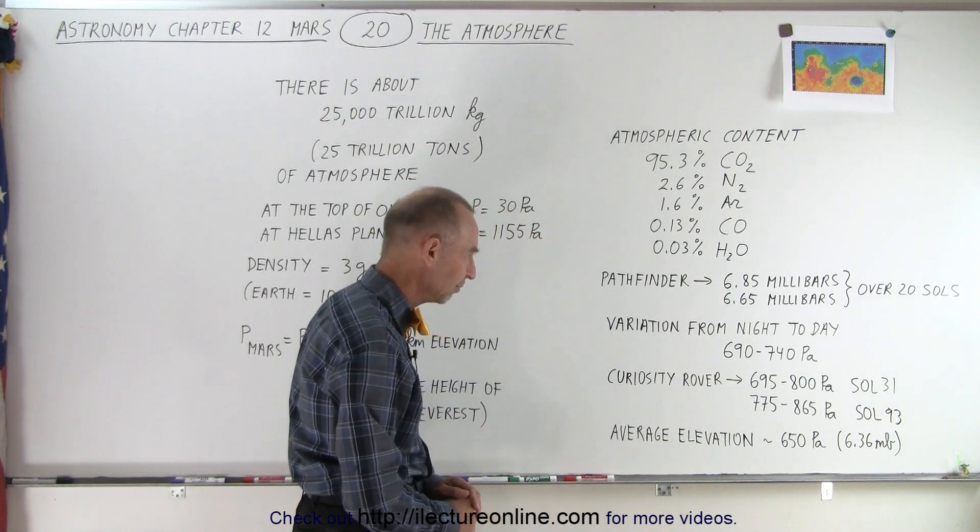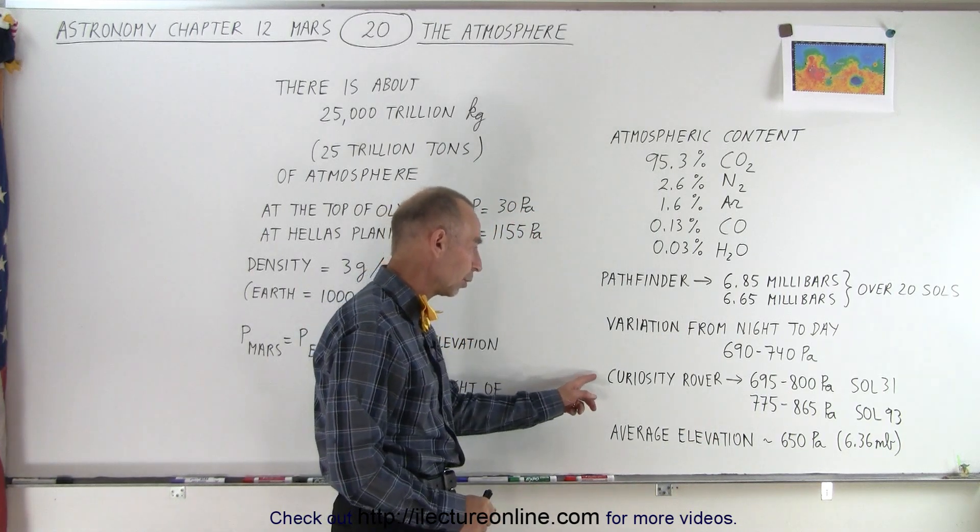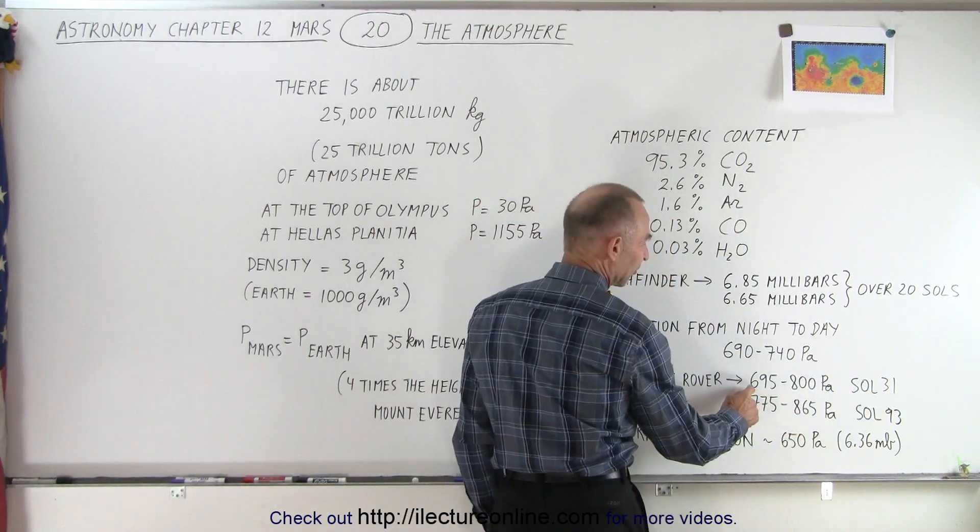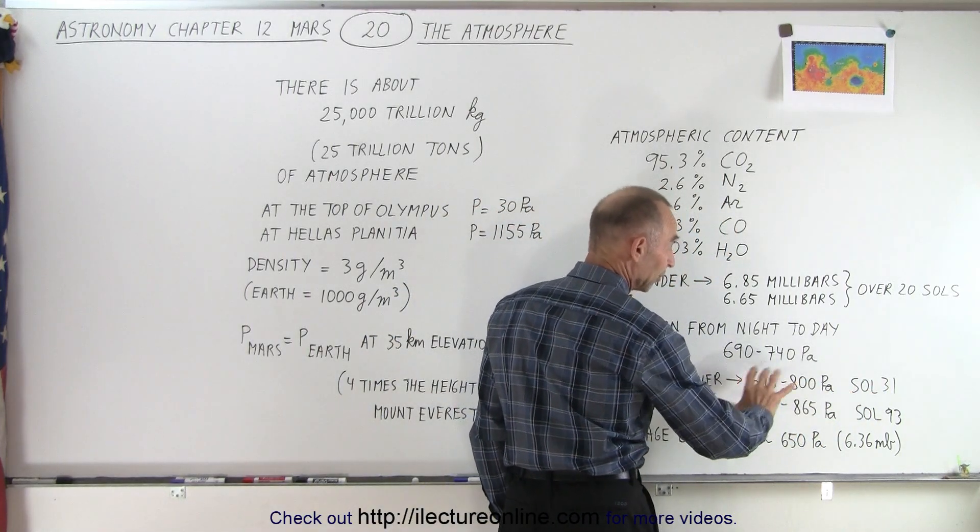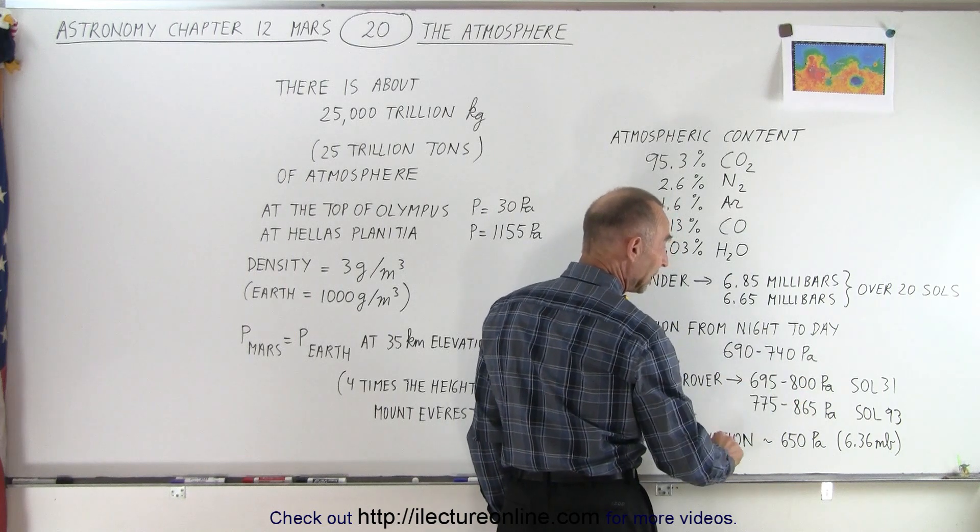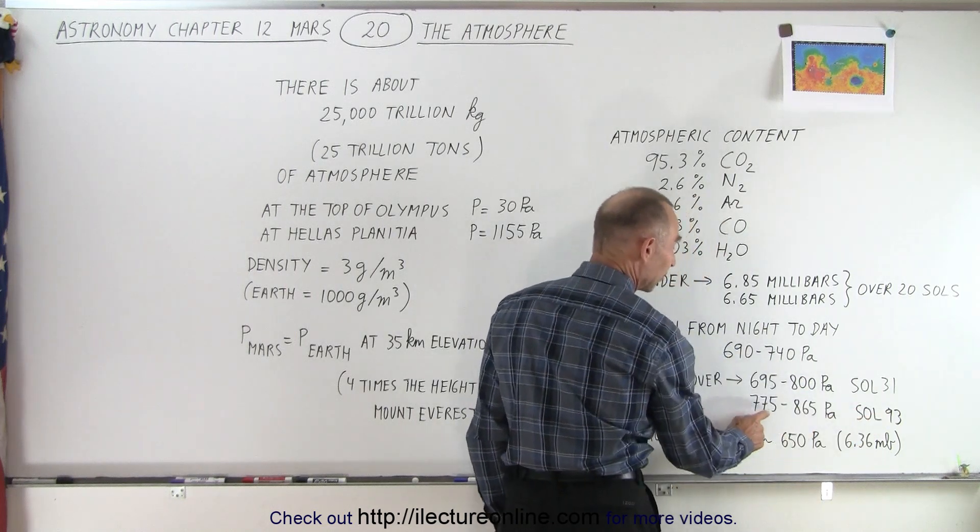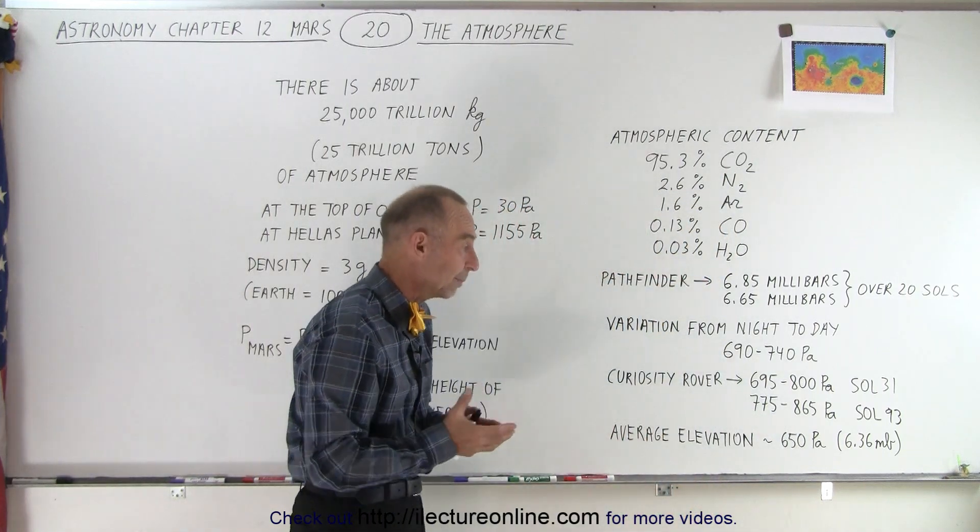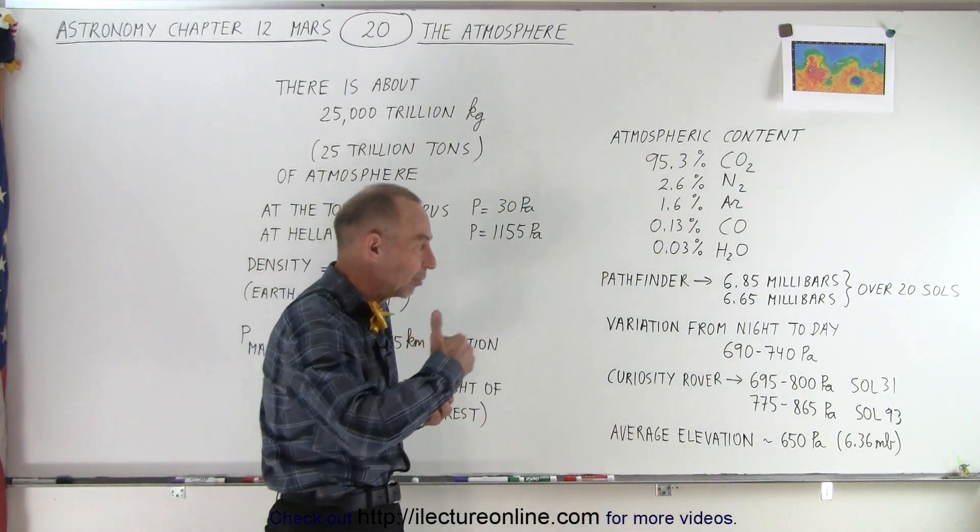Then where the Curiosity rover is located, notice on Sol 31, the pressure varies from 695 to 800, that's from night to day, and then on Sol 93, it changed from 775 to 865. Notice that the pressure increased quite a bit, that's because we're getting into the spring time.